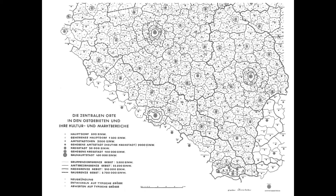So you first period people can just ignore this for a second. Those of you fourth period people, remember I told you that Christaller's idea was created by a German guy for the Nazis. So this is a map — a primary source for you — that shows you how he mapped out German cities and noticed this pattern that cities seem to be spread farther apart if they're larger.